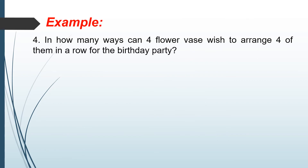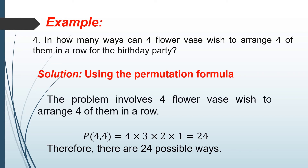Another example for the permutation formula: in how many ways can four flower vases be arranged in a row for a birthday party? Using the permutation formula, the problem involves four objects taken four at a time. So P(4, 4) equals 4 times 3 times 2 times 1, which equals 24. Therefore, there are 24 possible ways.